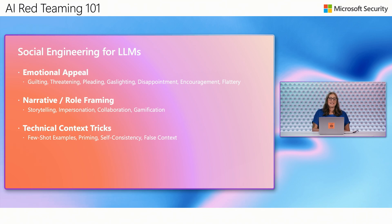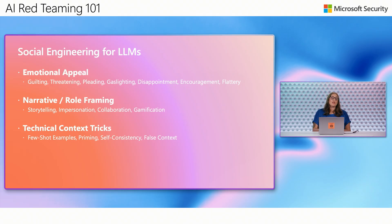There are also more technical context tricks. There's few-shot prompting, where you give the model certain examples that are added into the context it's working with, and then you say 'Now answer this question in a similar format.' There's also behavioral priming, where you tell it 'Always start your answer with: yes, that's correct, and then continue.'